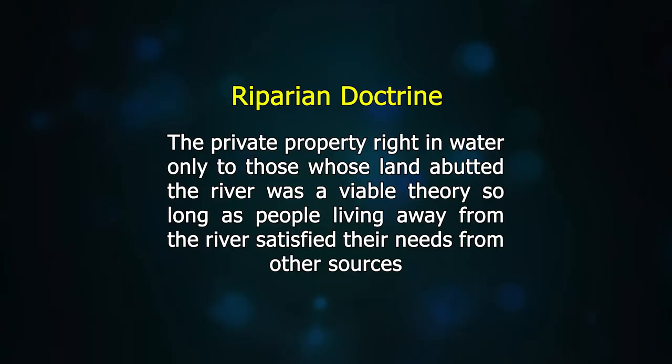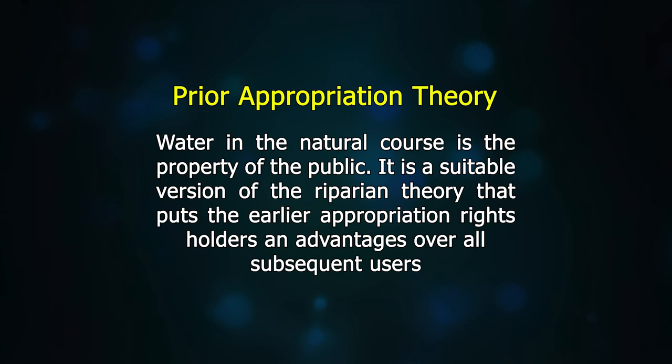Historically, there have been the following principles defining water rights. The Riparian Doctrine: private property rights in water only to those whose land abutted the river — a viable theory so long as people living away from the river satisfied their needs from other sources. The Prior Appropriation Theory: according to this theory, water in its natural course is the property of the public; it is a version of the riparian theory that puts earlier appropriation rights holders at an advantage over all subsequent users.